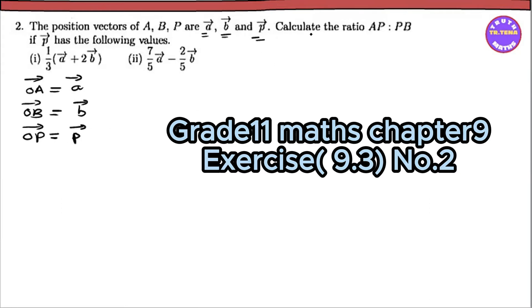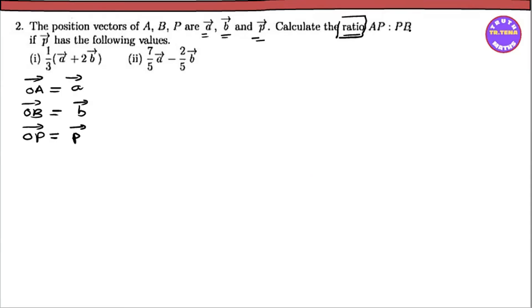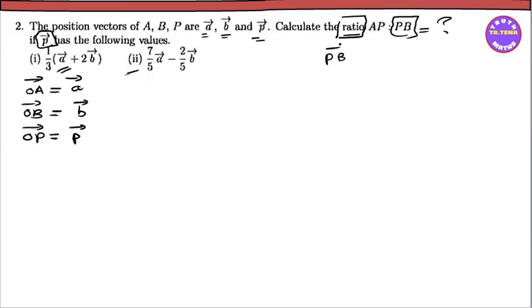The position vector of A, B, P. If P has the following value — the position vector of A, B, P minus A, B vector.